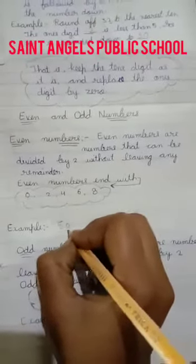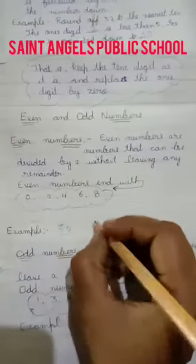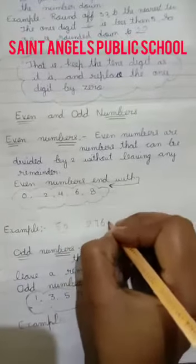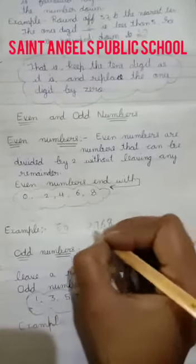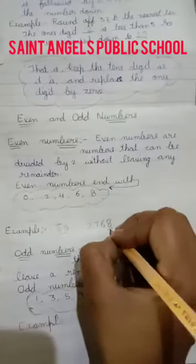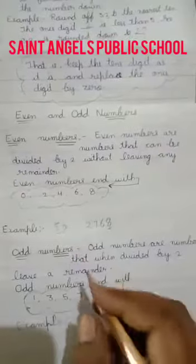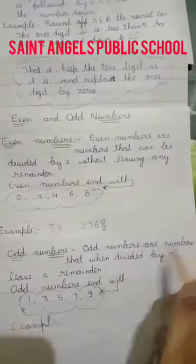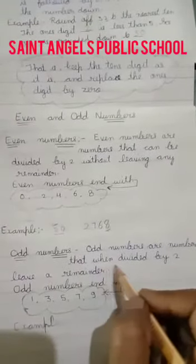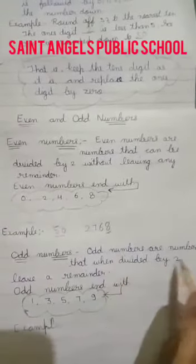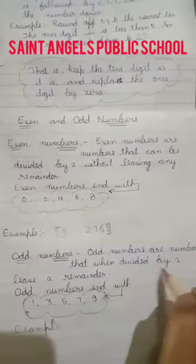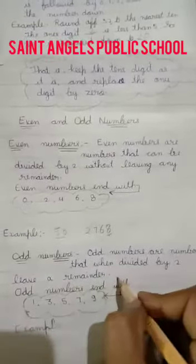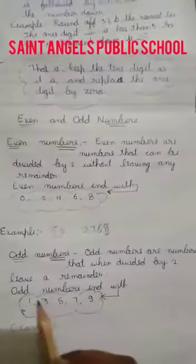Now look at examples. A number ending with 0 — 50 is even. A number ending with 8 — so it is even. Next, odd numbers: odd numbers are numbers that when divided by 2 leave a remainder. Jab aap 2 se divide kertay hai aur aapka remainder aata hai, ho aapka odd number hota hai.